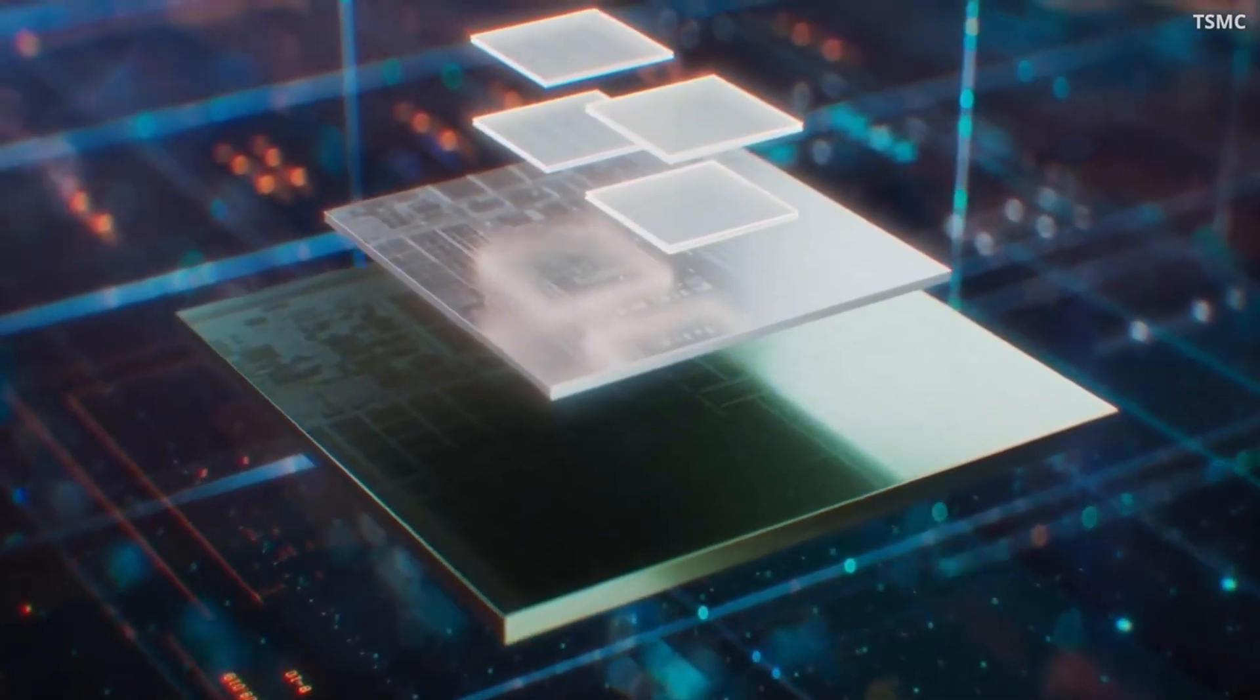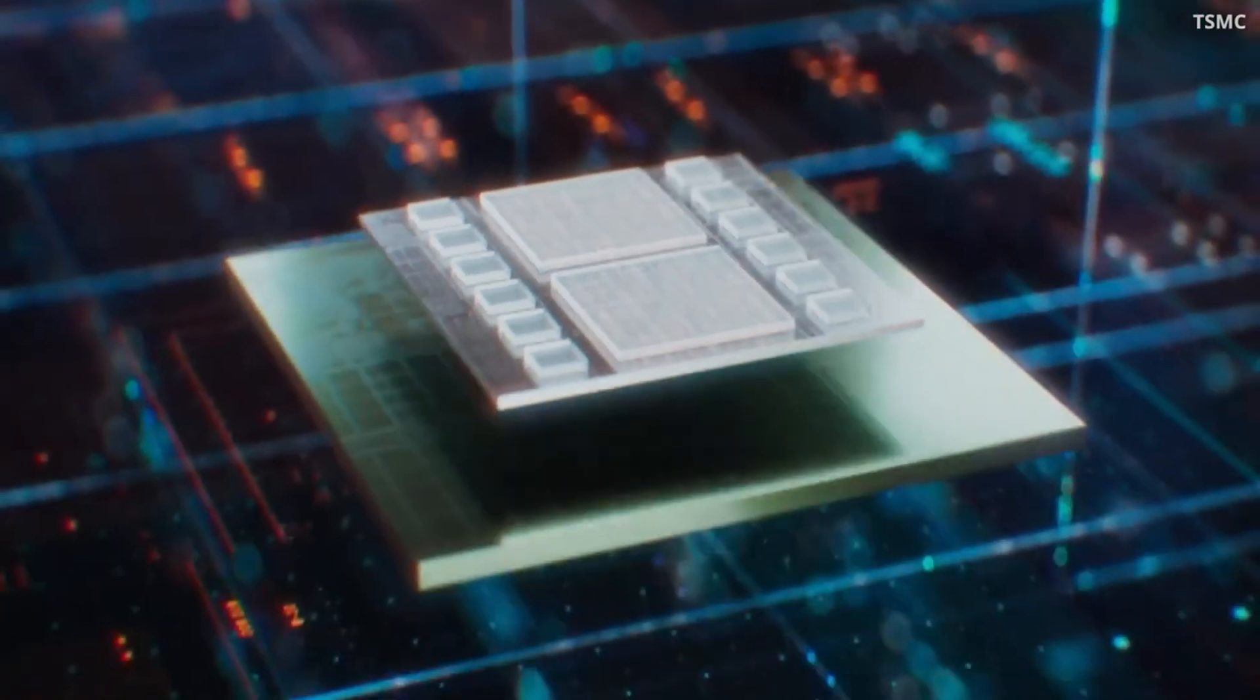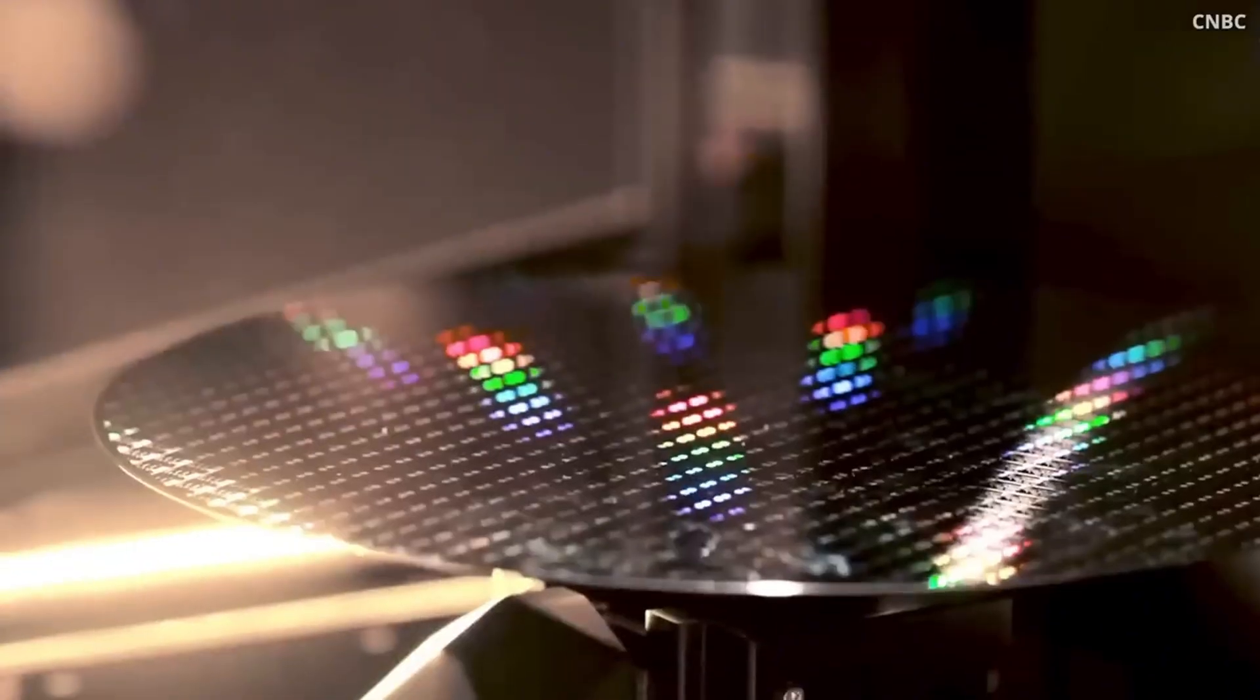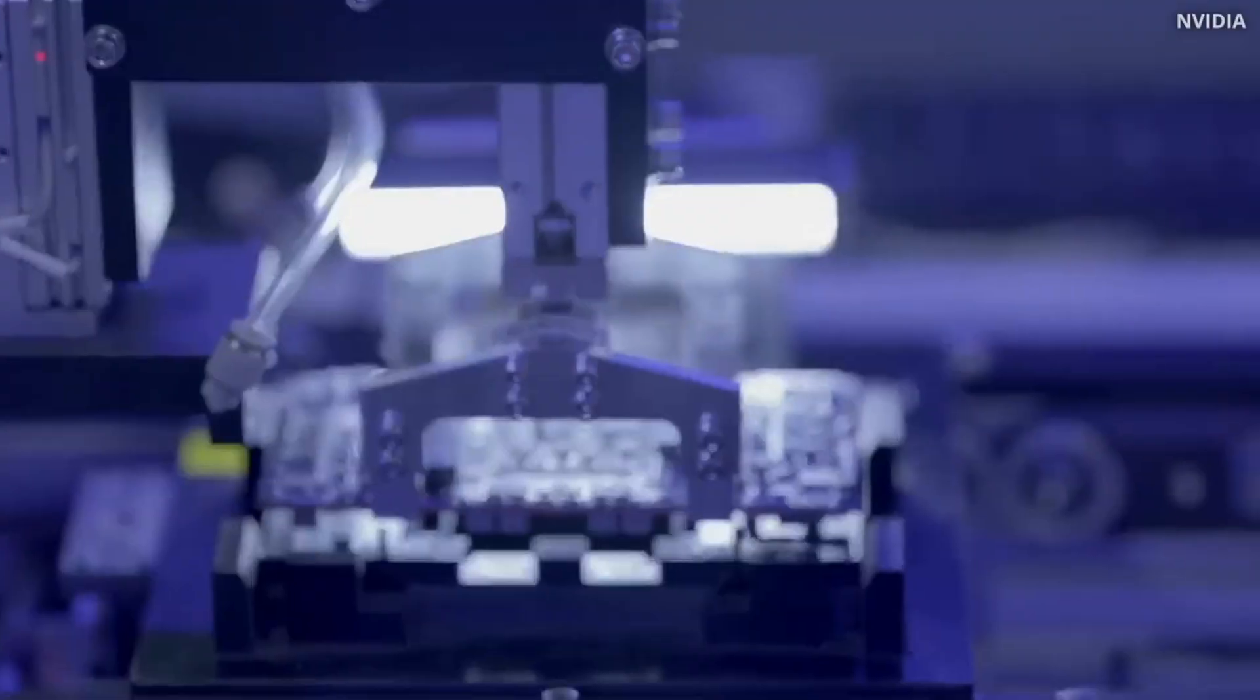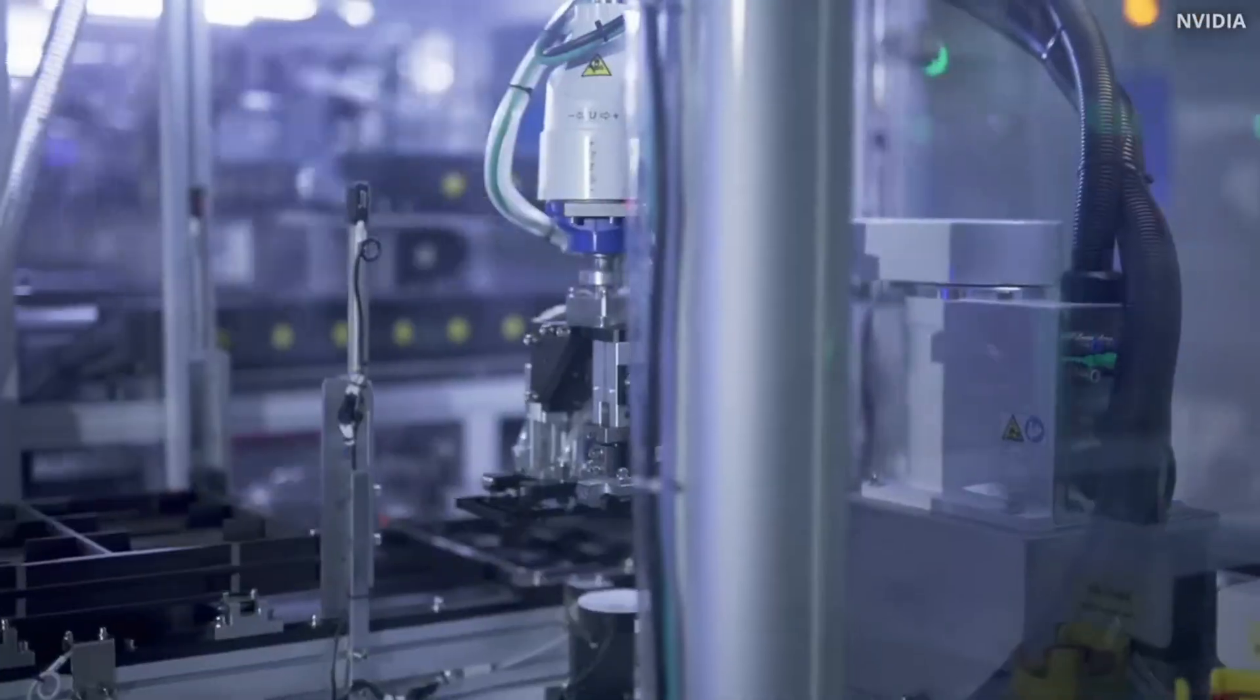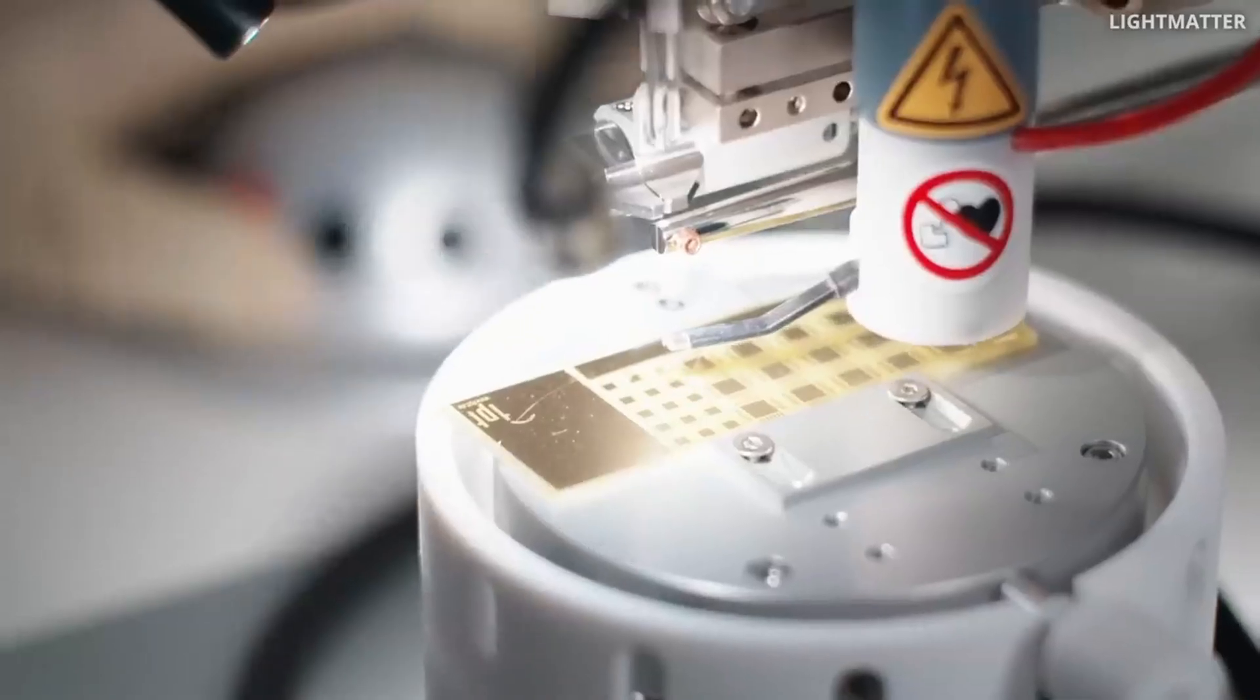Another big change is how power is delivered to the chip. Traditionally, all the wires that bring power to the chip are placed on top, mixed in with the logic circuits that process data. This is a bit like trying to route all the plumbing and electrical wires through the ceiling of your home. It gets messy, crowded, and inefficient.